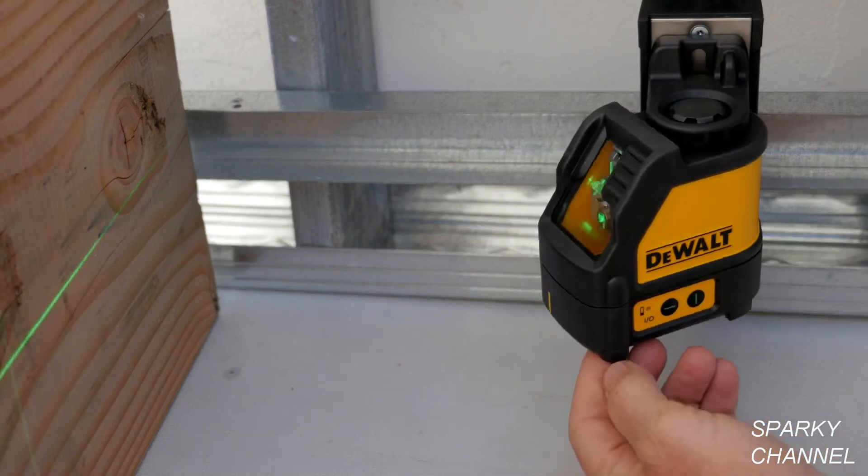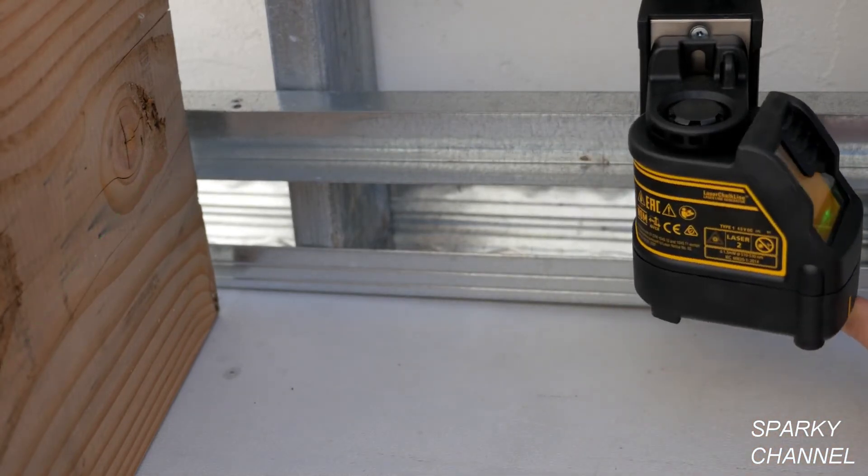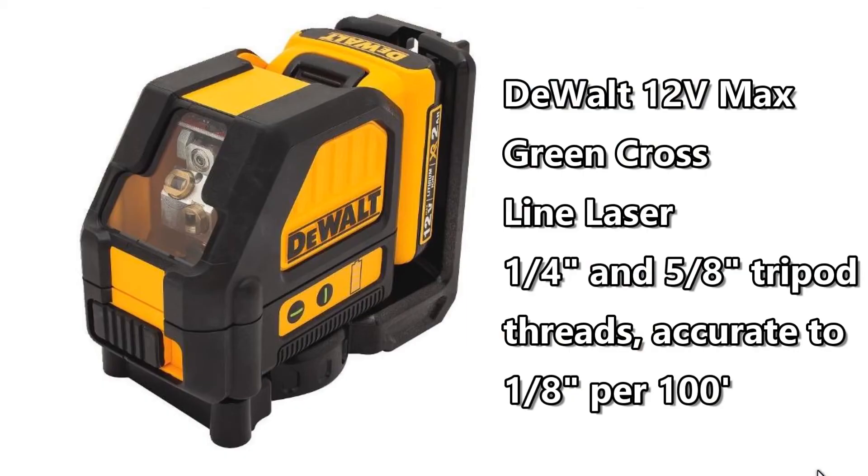I'll put a link in my video description for the cross line laser seen in the video and I'll put a link for another new similar Dewalt green cross line laser which is powered by the Dewalt 12 volt battery instead of AA batteries. It has one quarter and five-eighths inch tripod threads instead of just a quarter inch threads and it is accurate to one-eighth inch for 100 feet as opposed to one-eighth inch for 30 feet.